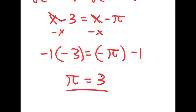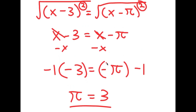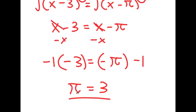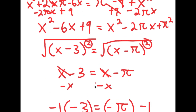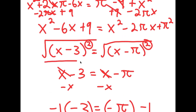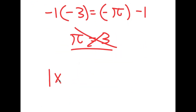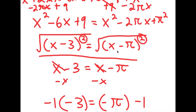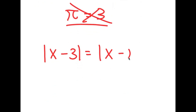Multiplying both sides by negative 1, I get pi equals 3. So there you have it — I just proved pi equals 3. But obviously, where did I go wrong? I actually went wrong on the step where I said the square root of x minus 3 squared equals x minus 3. This is actually not true — it equals the absolute value of x minus 3. The same goes for the square root of x minus pi squared: it equals the absolute value of x minus pi, not just x minus pi.